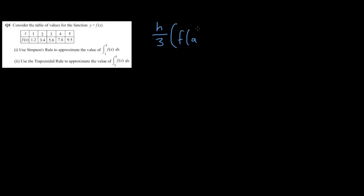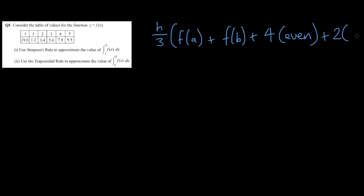In Simpson's rule, you need to remember the formula first. The formula is H over 3. A good way to remember the H over 3 part is to think about the Simpsons family — how many children do they have? They have 3 children, therefore it's H over 3. Then you have F(A) plus F(B), meaning function of A and function of B, plus 4 even, plus 2 odd.